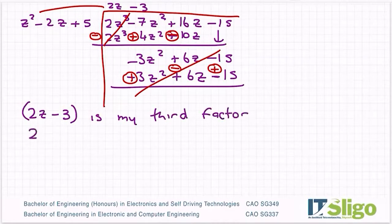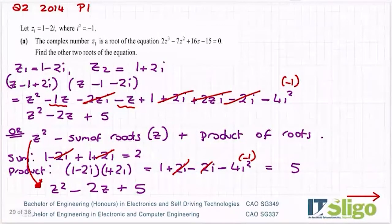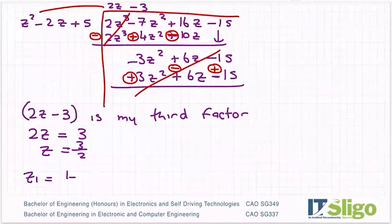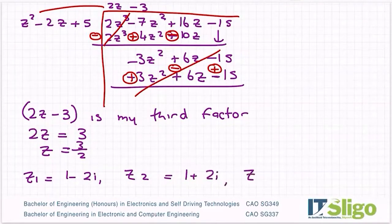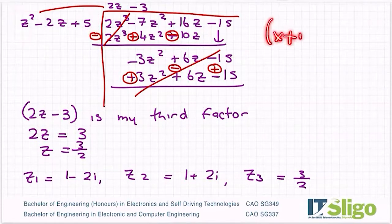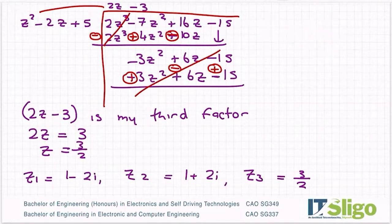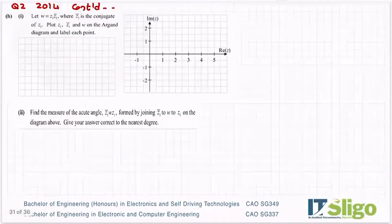So 2z minus 3 is my third factor. Setting it to zero: 2z equals 3, so z equals 3 over 2. Therefore the three roots are: z1 = 1 minus 2i, z2 = 1 plus 2i, and z3 = 3/2. You could also equate coefficients by multiplying the quadratic by a general linear factor and solving — that's perfectly fine as well.